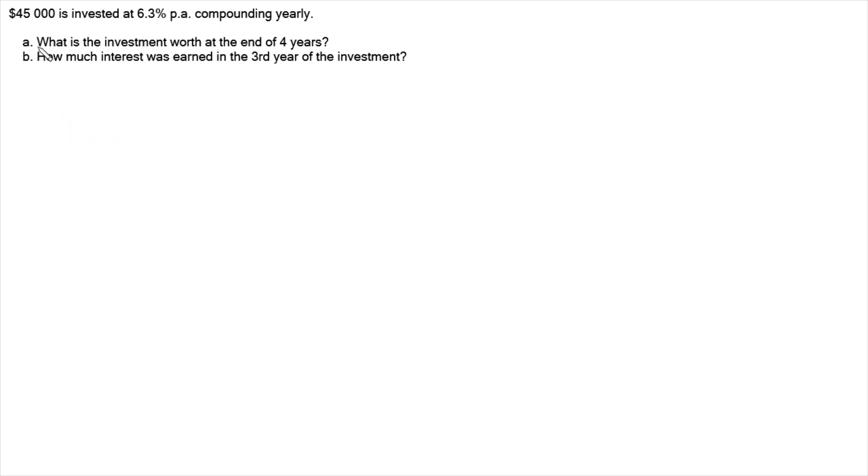Hi, in this video I'm looking at this question here, where we've got $45,000 is invested at 6.3% per annum compounding yearly, and we want to know what is the investment worth at the end of four years, and how much interest was earned in just the third year of the investment.